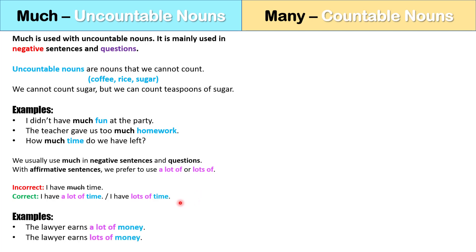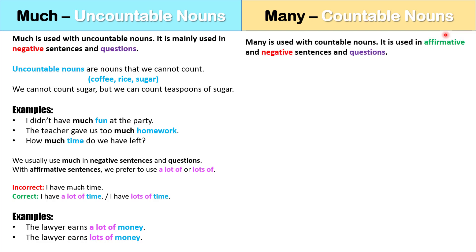The lawyer earns a lot of money, or the lawyer earns lots of money. We wouldn't say the lawyer earns much money. Now let's look at many. Many is used with countable nouns, and many is used in affirmative and negative sentences and questions. Countable nouns are nouns that we can count — dogs, chairs, hats.